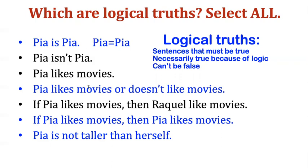Consider this one: 'Pia likes movies or doesn't like movies.' All of the sentences in blue are logical truths. This is how the word 'or' works — either Pia likes movies, or if she doesn't like movies, then it has to be the case that 'she likes movies' is false and the other disjunct is true. So one way or the other, that has to be true. That's why it is a law of logic.